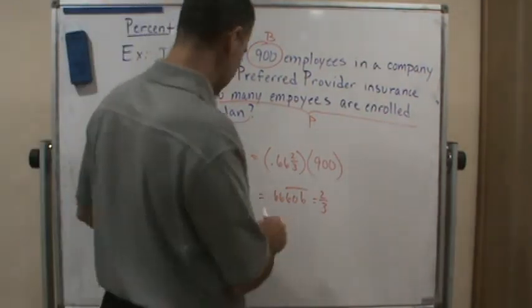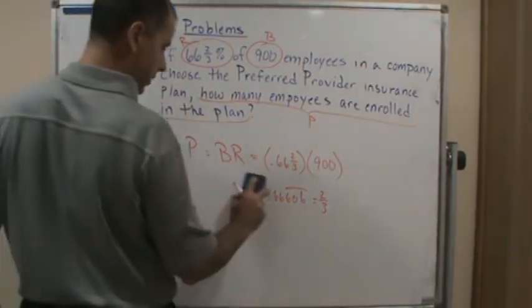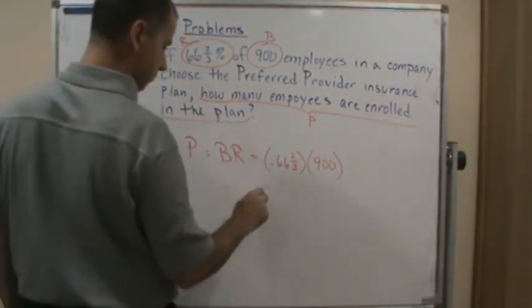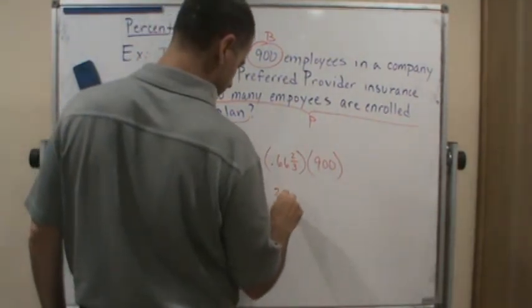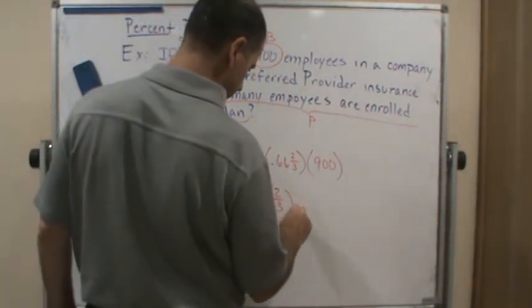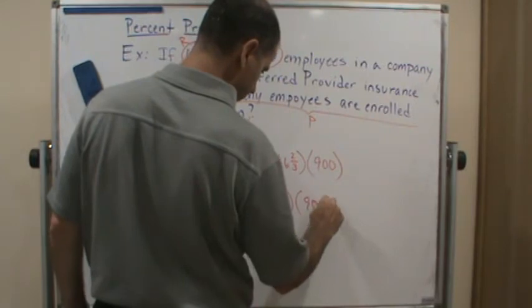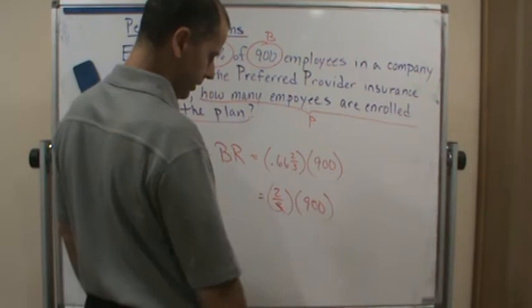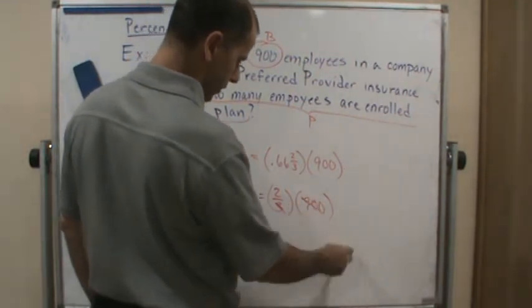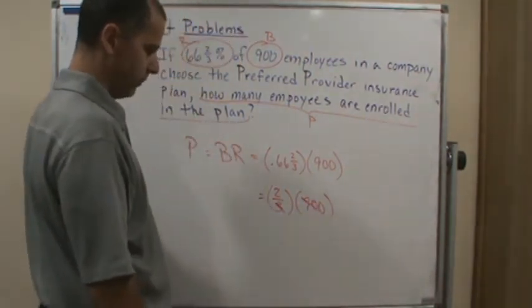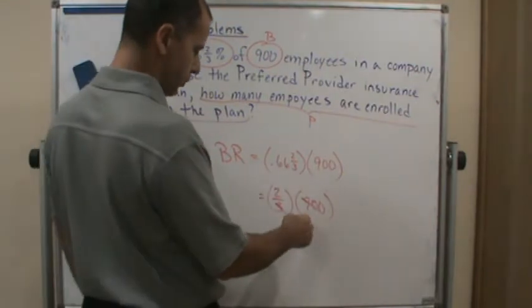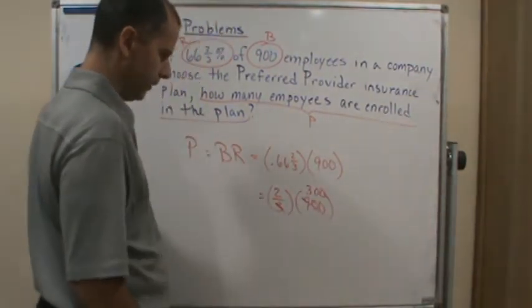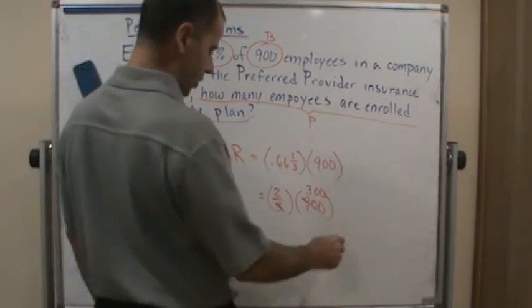So if you notice that 0.66 and two-thirds is the same as two-thirds, then it just becomes two-thirds of 900. And then you can cancel, because this 3 cancels with 900, which becomes 300. And so the answer is 600.